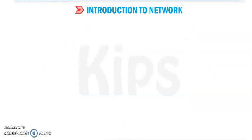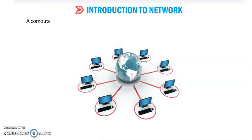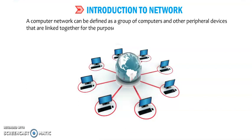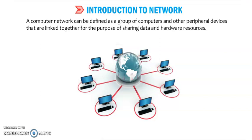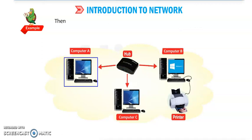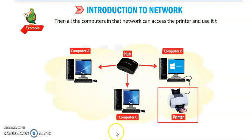The next topic is introduction to networks. A computer network can be defined as a group of computers and other peripheral devices that are linked together for the purpose of sharing data and hardware resources. For example, if one computer in the network has a printer attached to it, then all the computers in the network can access and use that printer. In this diagram, computers A, B, C, and D are all connected through a hub, and the printer is attached to computer B.